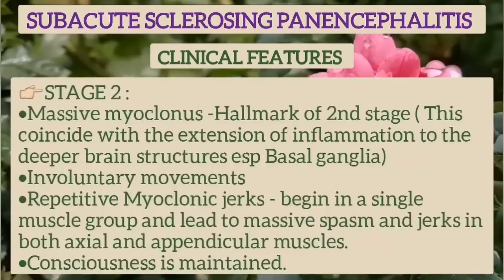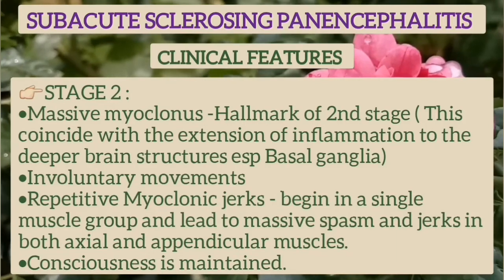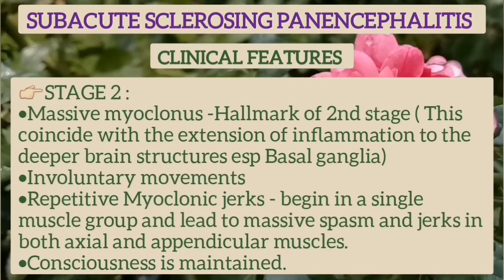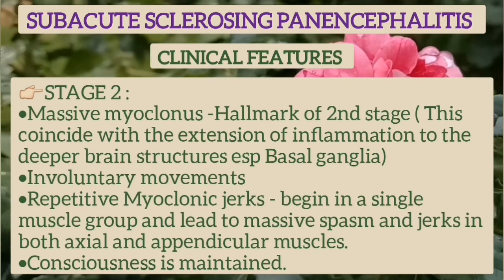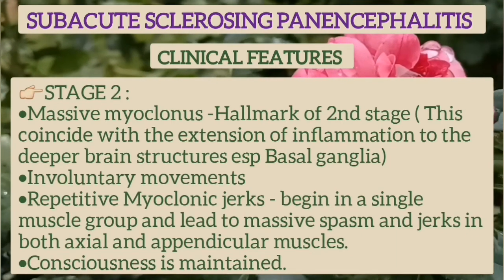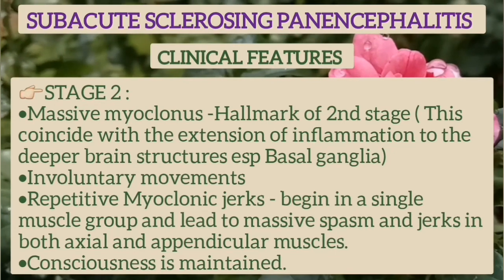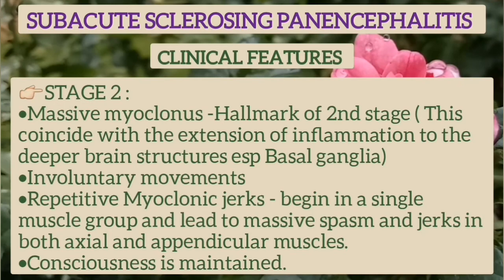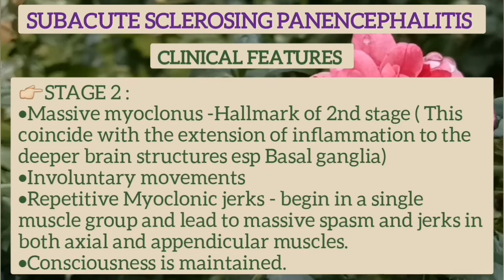In stage 2, there are massive myoclonic jerks, which are the hallmark of this stage. This coincides with extension of inflammation to the deeper brain structures, i.e., the basal ganglia. There are involuntary movements and repetitive myoclonus beginning in a single muscle group, leading to massive spasms involving both the axial and the appendicular muscles. The patient remains conscious in this stage.